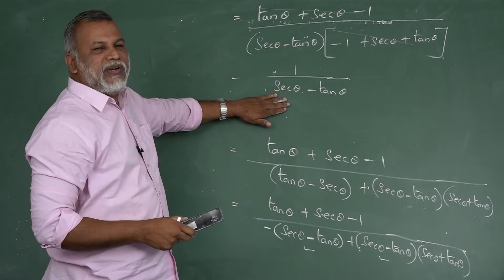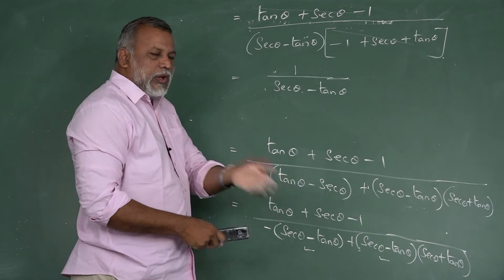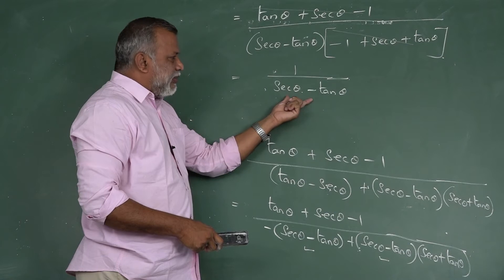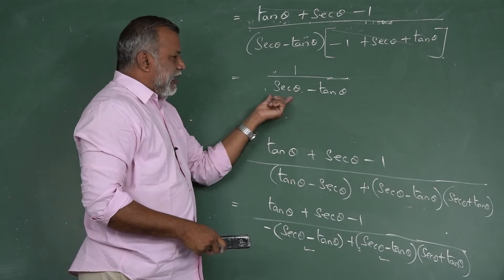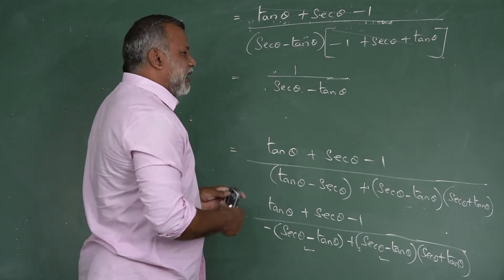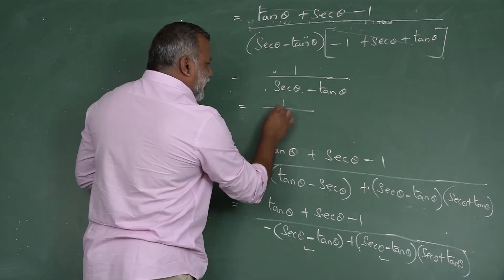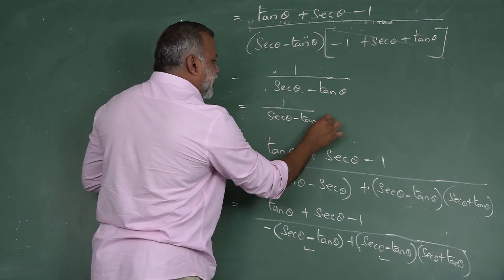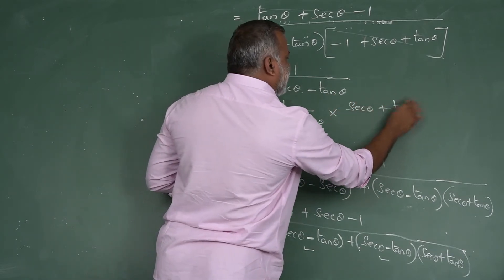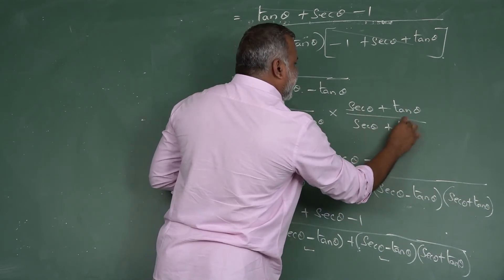Now we need to convert 1/(sec θ - tan θ) into the required form. From 10th standard, when you have a denominator of the form a - b, multiply and divide by its conjugate. So multiply numerator and denominator by (sec θ + tan θ).